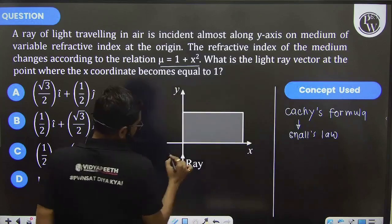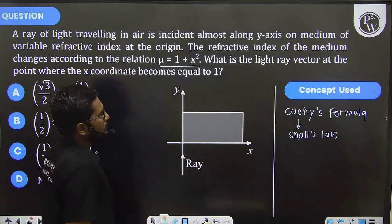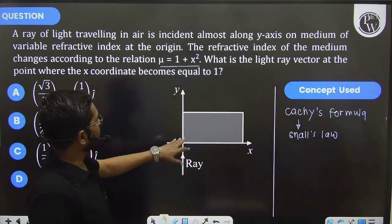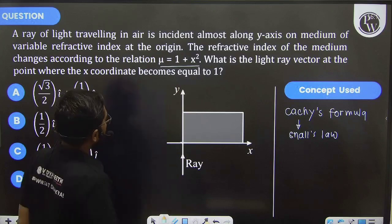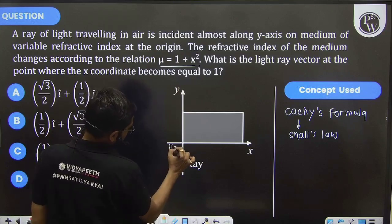When the ray just enters at the boundary of the medium, at that time you can place the value of x as 0. So here the refractive index is going to be 1.